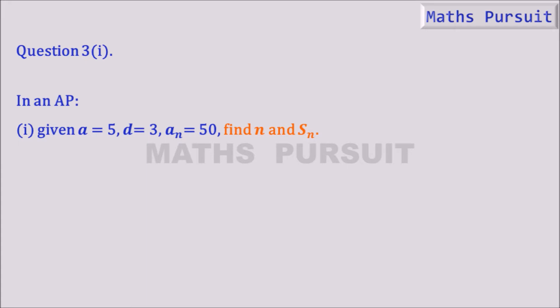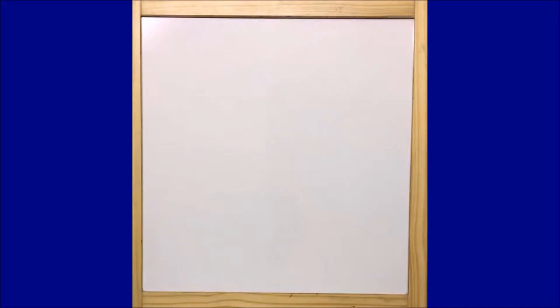It looks like the question is a very simple one. Now let us see how we can solve this question. As per the question, we are going to find n and Sₙ, and the given values are: a equals 5, d equals 3, and aₙ equals 50.